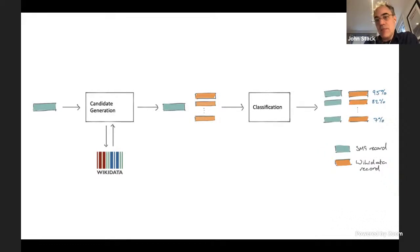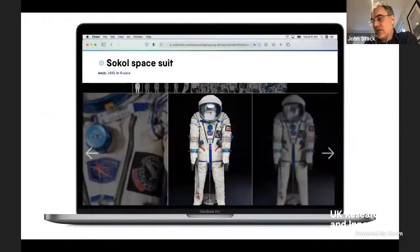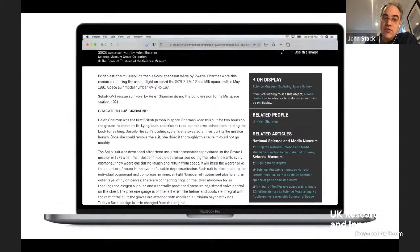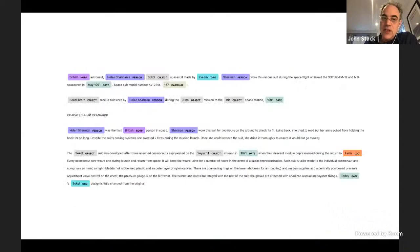And then the third step is looking at records that have free text in them. So this is Helen Sharman's spacesuit. And you can see there's a whole bunch of text there. And so we can take that text and using natural language processing, we can start to go through and analyze the things mentioned in the text. And trying to draw out specific things and build, but also to turn those into links.